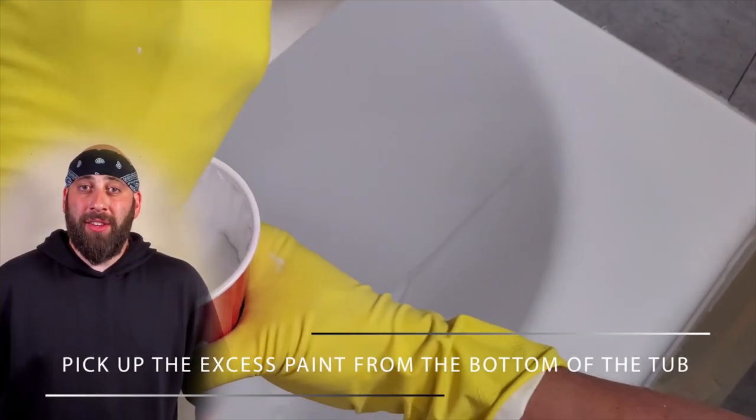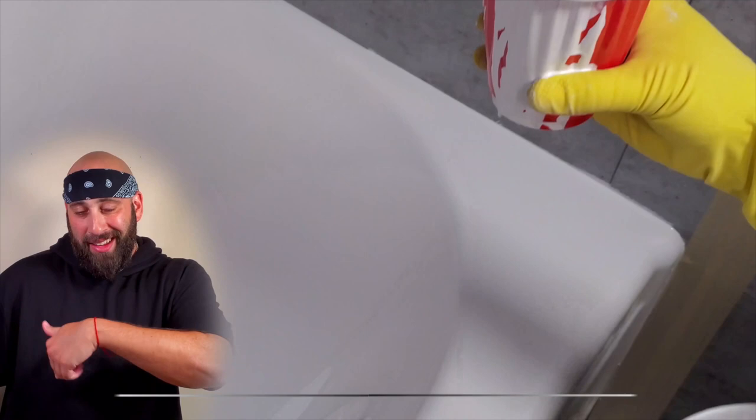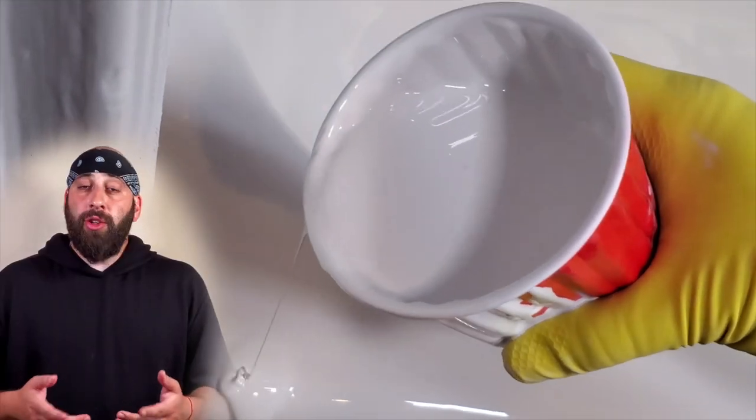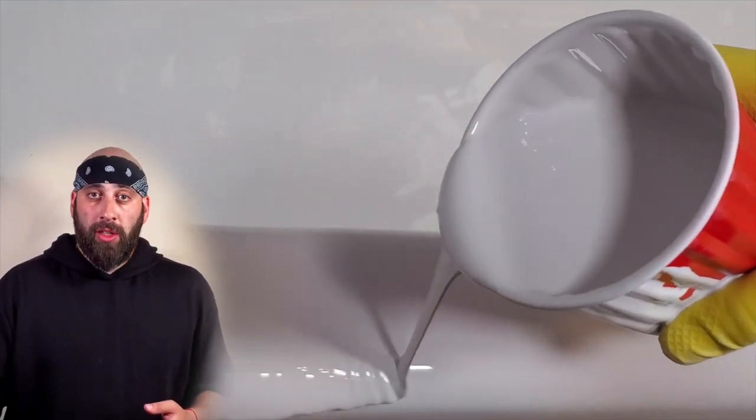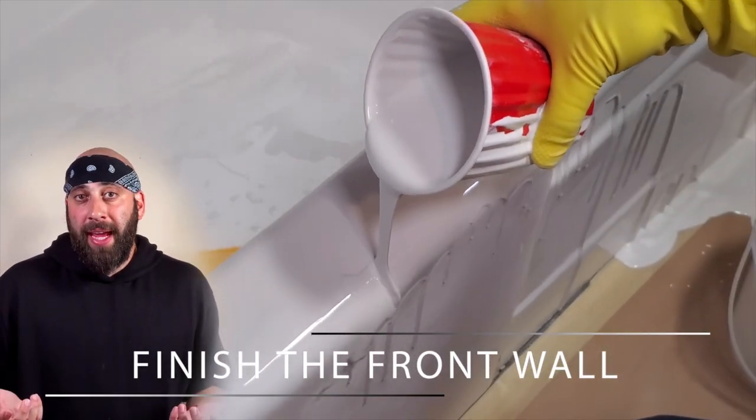Pour the remaining paint on the top of the front wall. And if you need more paint, just go get it inside of your tub. Now do the same thing that you did to the inner walls. Keep using that paint that drips down onto the paper to cover up any spots that don't have paint.